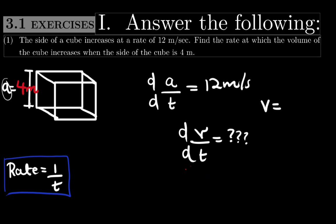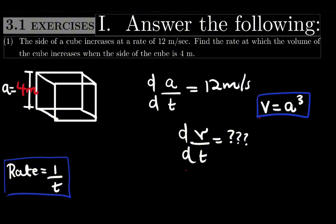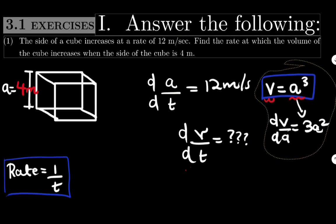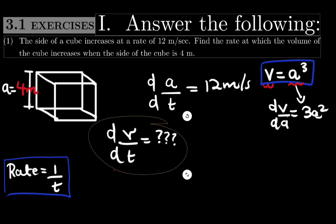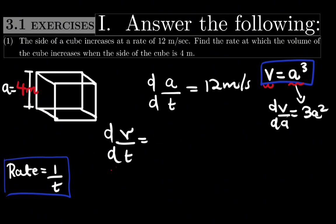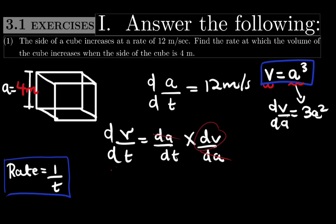We know that the volume of the cube is A cubed. We derive the volume with respect to the side, calling this dV over dA. When you derive A cubed, you get 3A squared. To get dV over dt, we take dA over dt multiplied by dV over dA — when you cancel out the dA terms, you finally have dV over dt.